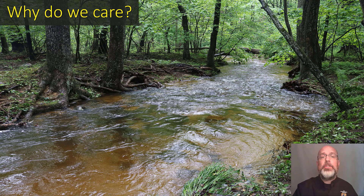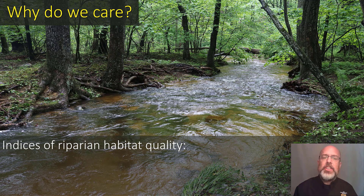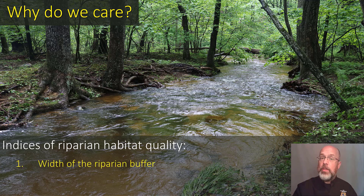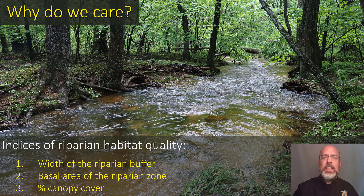Why do we care about stream canopy cover? When we look at standard indices of riparian habitat quality, there are several things that go into those indices. They include the width of the riparian buffer — how wide is it from the edge of the stream — the basal area of the riparian zone, and the percent canopy cover. We had a previous video on basal area, and today we're going to focus on canopy cover.